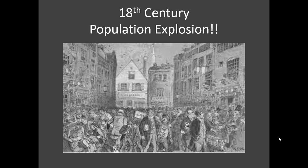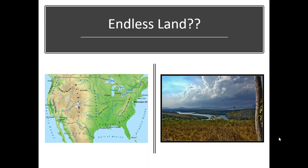The idea of why they come is this thought of endless land. It was somewhat true, but they came in such numbers that the English colonies on the East Coast were somewhat hemmed in by the Appalachian mountain chain — they couldn't really spread out over it. And on the other side of those mountains was all French land. So you start to have this conflict between the English and the French, and that conflict is growing.